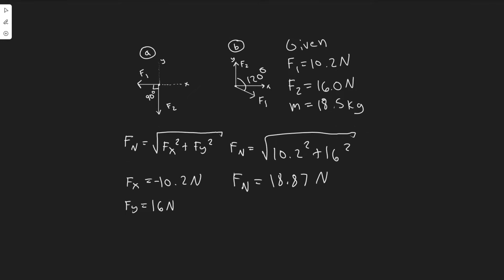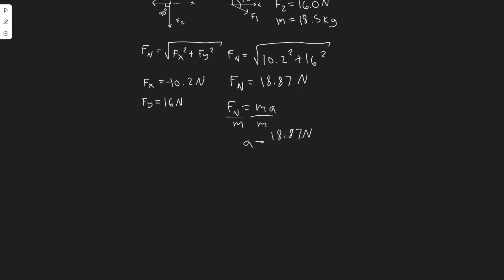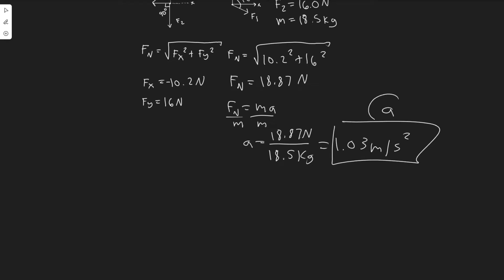So 18.87 newtons is the net force for part A. To find the acceleration, Fn equals ma, so divide by the mass: 18.87 newtons divided by 18.5 kg gives approximately 1.03 meters per second squared. So for part A, the net force is 18.87 N and the acceleration is 1.03 m/s².